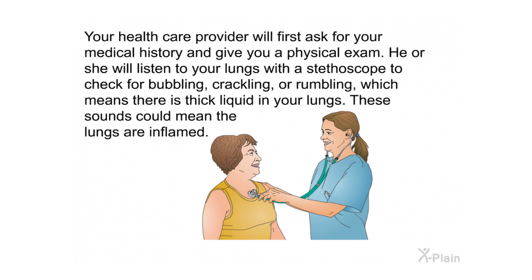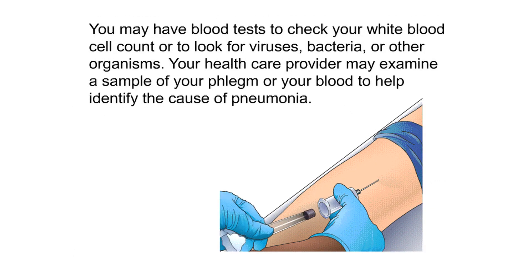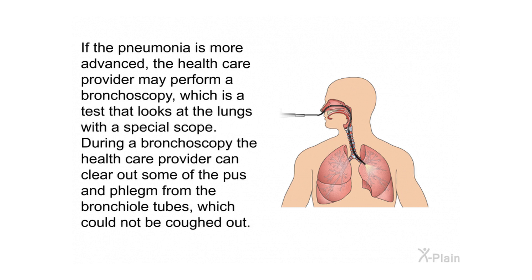Your health care provider will first ask for your medical history and give you a physical exam. They will listen to your lungs with a stethoscope to check for bubbling, crackling, or rumbling sounds, which indicate thick liquid in the lungs and possible inflammation. Your doctor might also order a chest X-ray to show whether you have pneumonia, how severe it is, and where it is located. If X-rays aren't clear, you might need a CT scan. Blood tests may check your white blood cell count or look for viruses, bacteria, or other organisms. Your health care provider may examine a sample of your phlegm or blood to help identify the cause.